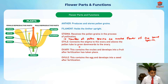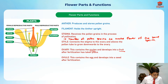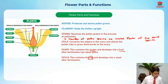The ovary contains the ovules and develops into a fruit after fertilization has taken place. Ovules actually develop into seeds, and ovules contain the egg.